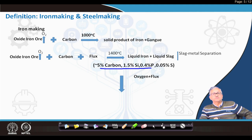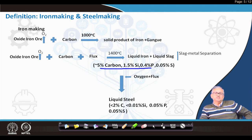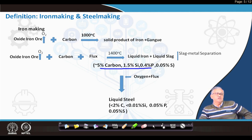Flux is also needed for elements like phosphorus — without a basic slag you cannot remove phosphorus. Silicon and carbon removal is possible without flux, but flux retains impurities in the slag, preventing reversion to liquid steel. The resulting liquid steel has less than 2% carbon, less than 100 ppm silicon, around 500 ppm phosphorus. Sulfur cannot be removed under oxidizing steel making conditions — sulfur is only removed under reducing conditions, such as in the blast furnace.